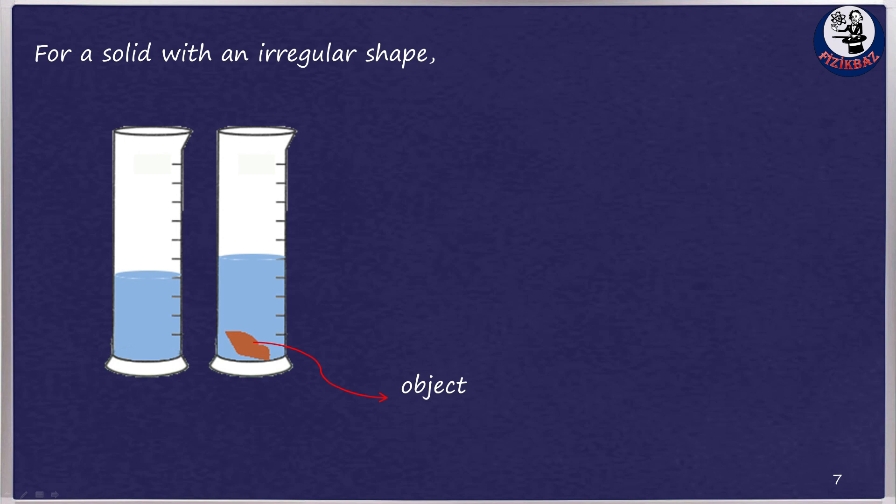For non-regular shaped objects, the mass of the solid is found on a balance. As we learned before, we can use a method called water displacement to measure the volume. Put the object in a measured amount of water and measure how much the water rises on a graduated cylinder. The difference is the volume of the object. You can then calculate the density using our formula.